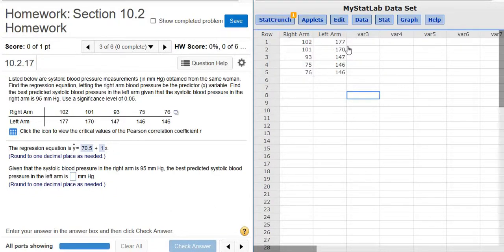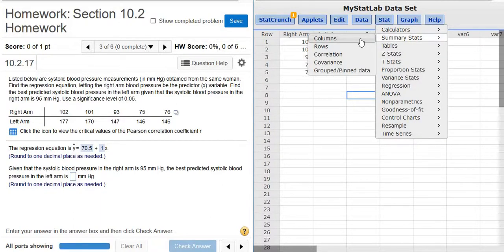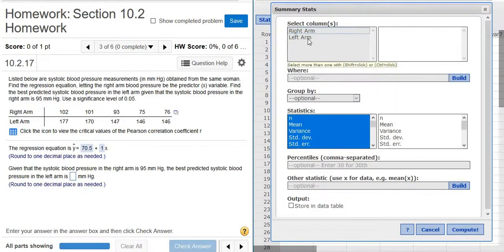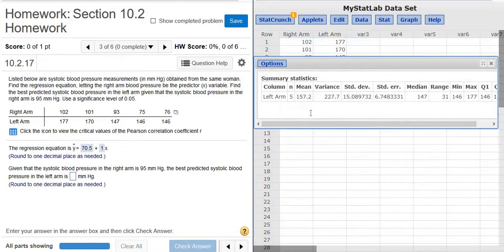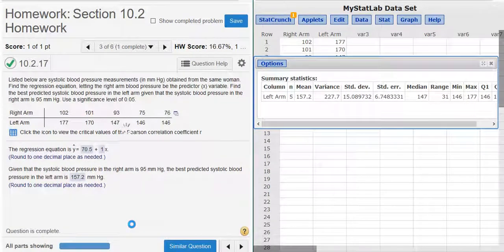So what you do is you take the mean of the left arm measurements. You go to Stat, Summary Stats, Columns. Then you pick the left arm, which is the Ys, and you click Compute. And there is your answer, 157.2. It's the mean, 157.2. Next question. That's it.